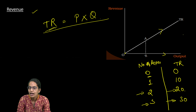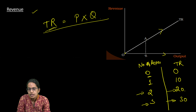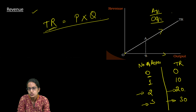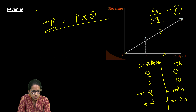How do we understand the slope here? The slope is AQ1 divided by OQ1, and this is how we understand the slope of the straight line. This ratio AQ1 by OP1 is nothing but the price. So the slope of the total revenue line represents the price.